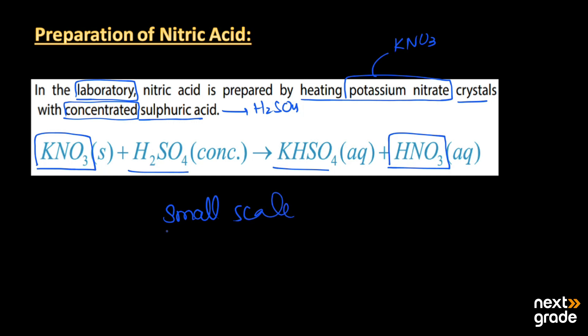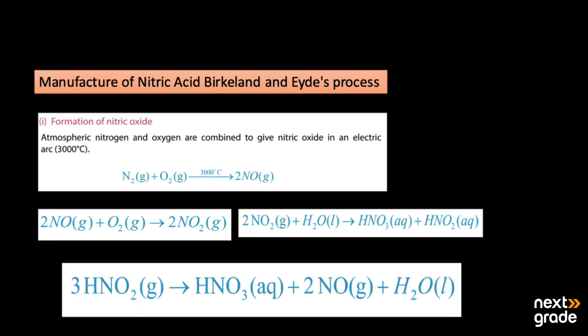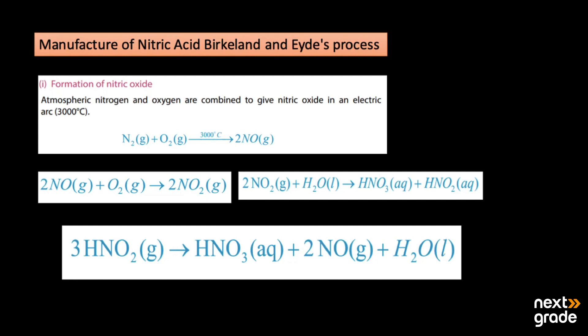For larger-scale production, we use a second method called the manufacturing of nitric acid by the Birkland-Eyde process. This process involves different steps, the first of which is the formation of nitric oxide.